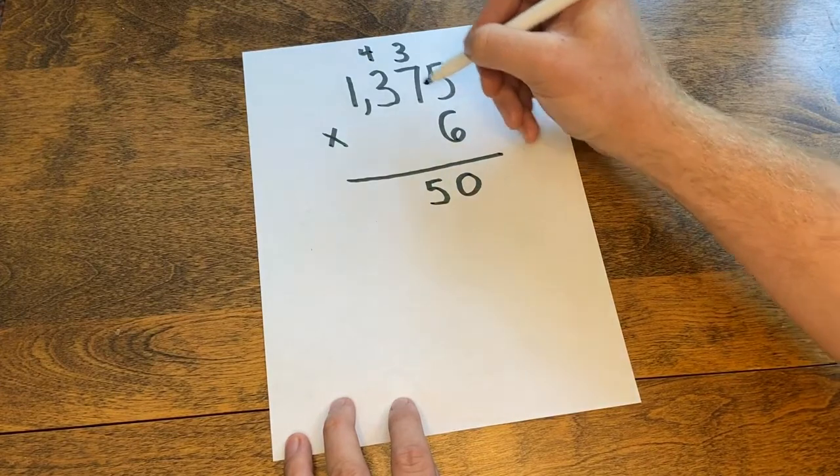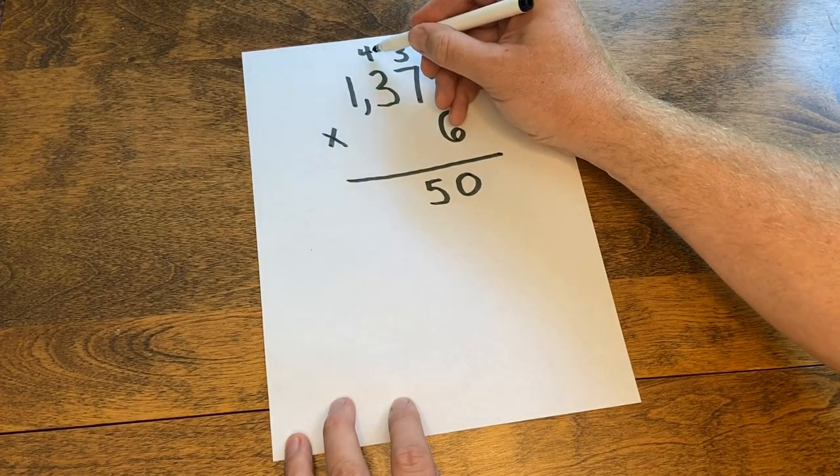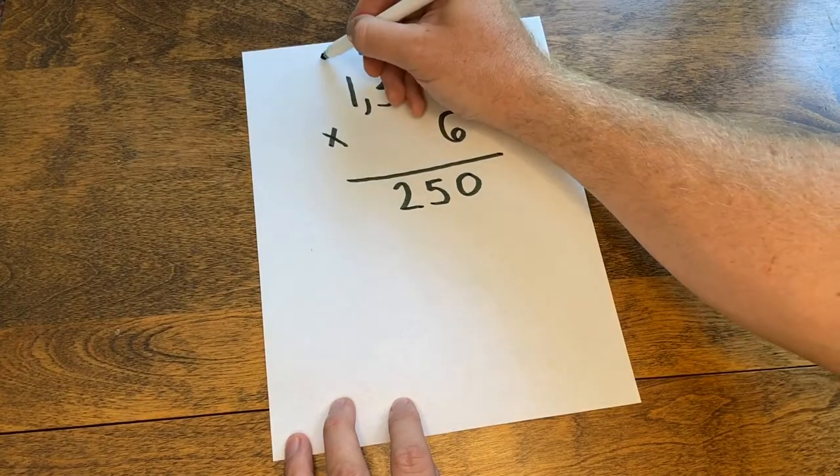6 times 3 is 18, plus 4 more is 22. Drop my 2, carry my other 2.